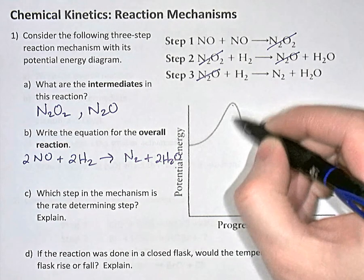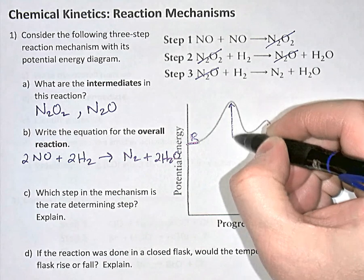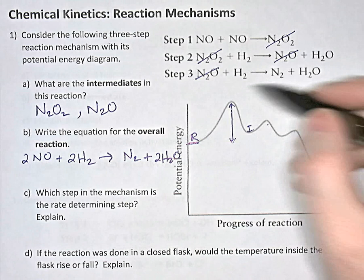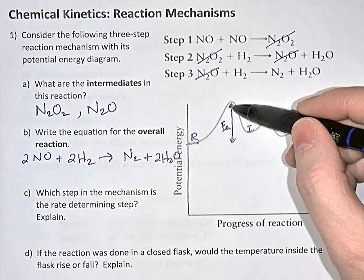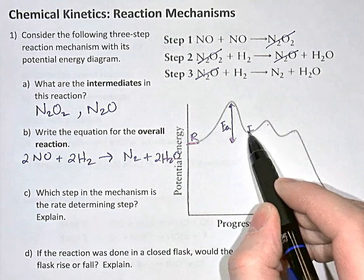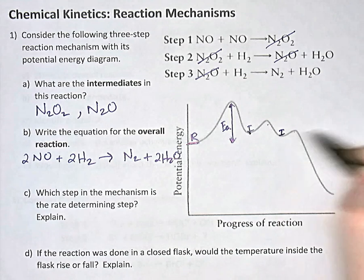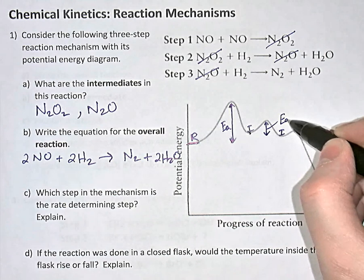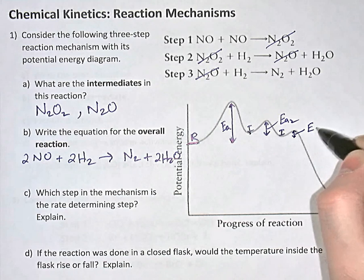We can look at step one, where the reactants begin, and realize that to create the products of step one — the intermediates — we need a certain activation energy. This difference in potential energy is the activation energy for step one. Similarly, step two begins at a different energy level, and to create step two's products we need the EA for step two. Step three has the very smallest EA of the three steps.